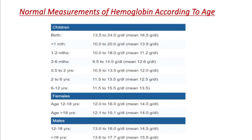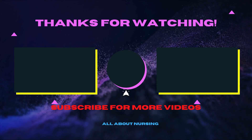For adult males, the hemoglobin range is 13.6 to 17.7 gram per dL, with an average of 15.5 gram per dL. So according to age — children, females, and males — these are the normal values and ranges of hemoglobin.